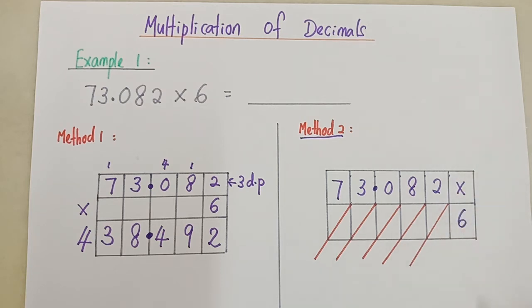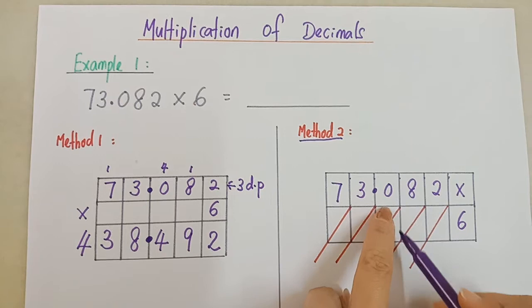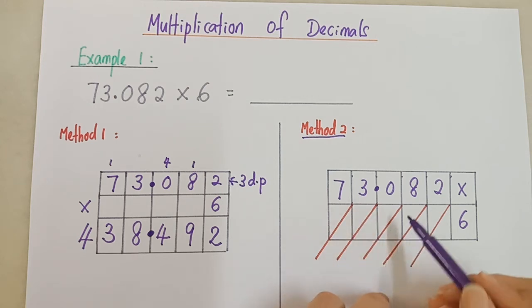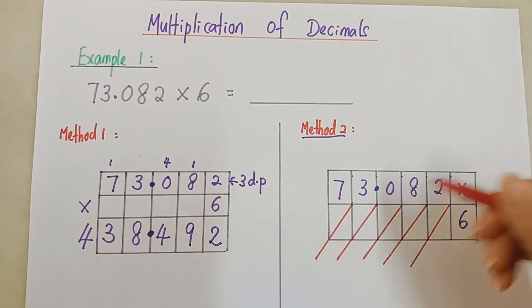I write here 6. For this one, you can fill in the multiplication of 6. You can start with any box, not necessary to start from here. Let's say I want to start from 0. That is 0 times 6. 0 times 6 become 0, right? So I write 0, 0.